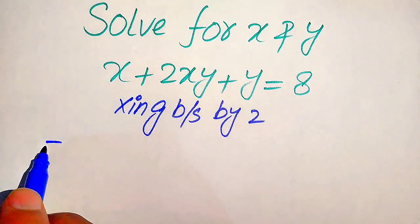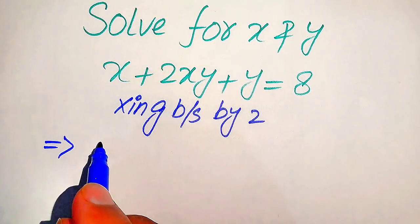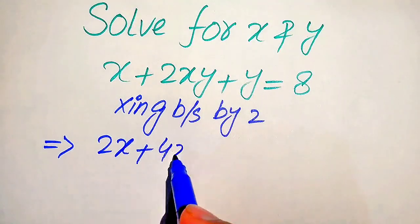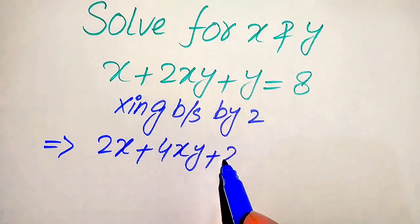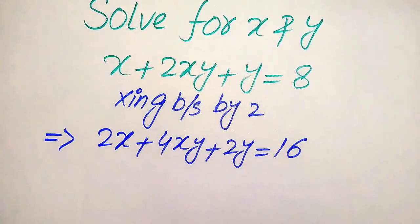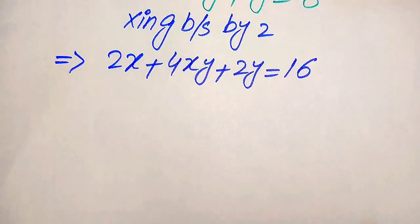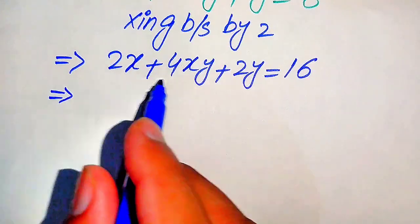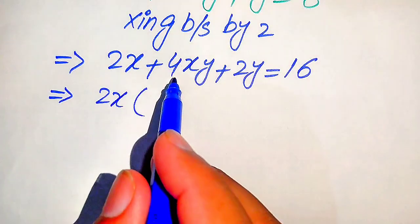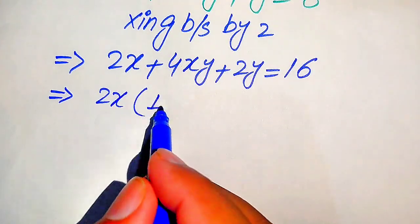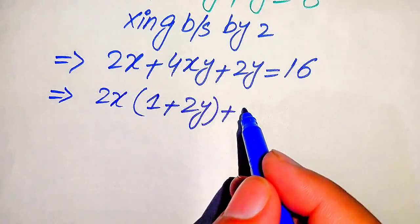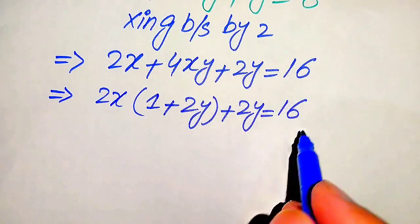After multiplying both sides by 2, each term becomes: 2x plus 4xy plus 2y equals 16. Now from the first two terms, we have 2x as a common factor. When we take out 2x, we get 2x times (1 plus 2y), plus 2y, equals 16.